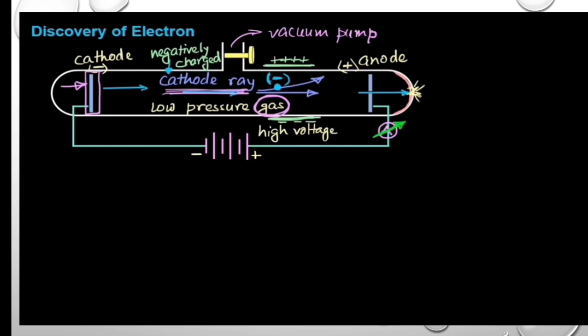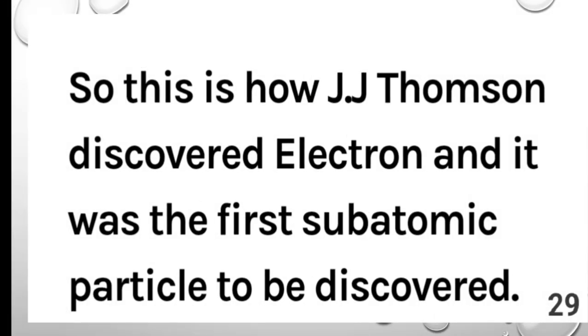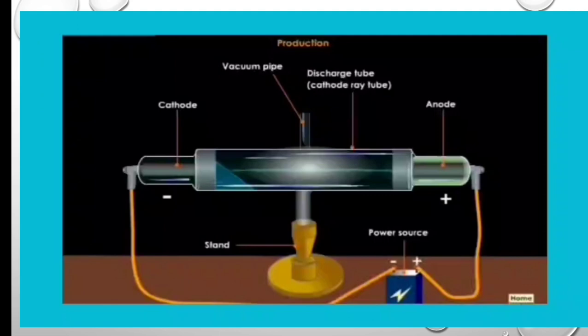So, this is how J.J. Thomson discovered electron, and it was the first experiment. Now, let's see the properties of cathode rays.